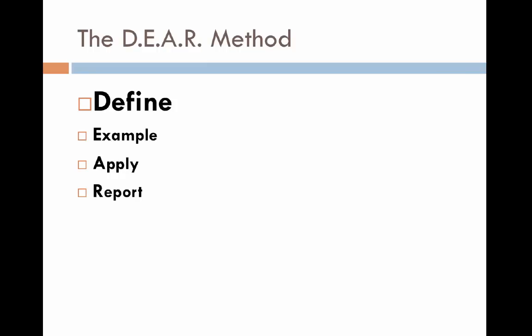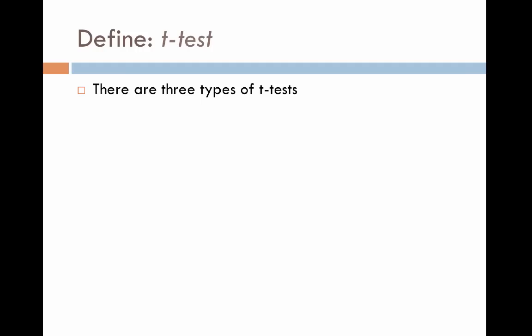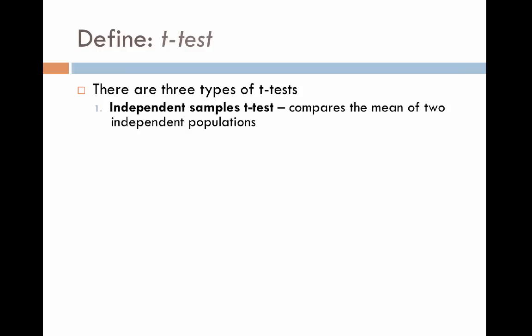So let's start with the D — Define. There are three major types of t-tests. The first is what's called an independent samples t-test, and that's the one we'll focus on today. The definition is that it compares the mean, or the average, of two independent populations.